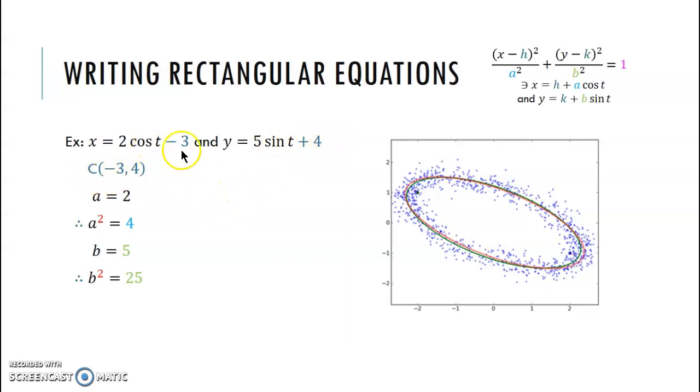So we want to extract the information that we can from our parametric equations. So what's being multiplied to our cosine and our sine, that's our a and our b. And what's being added or subtracted, that's our center. That's our h, k.